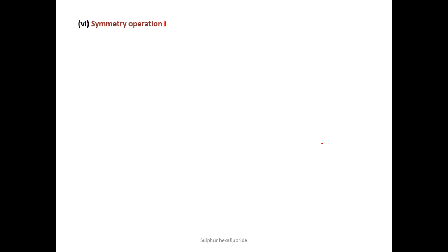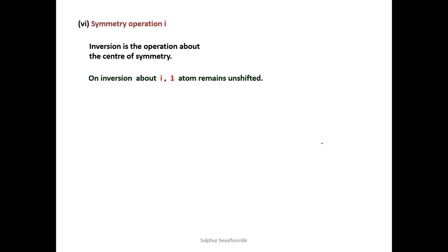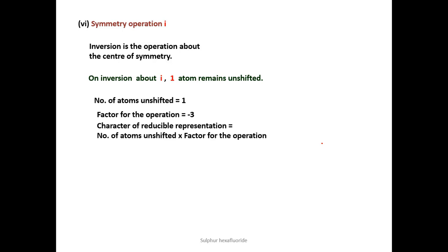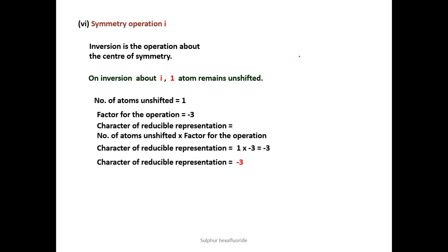The next operation is inversion about the center of symmetry. During inversion, all atoms except sulfur at the center of the octahedron get shifted to the opposite direction, leaving only one unshifted atom. The factor for inversion is −3, giving a character of 1 × (−3) = −3. The transformation matrix for inversion I has diagonal elements −1, −1, −1, whose sum equals −3.